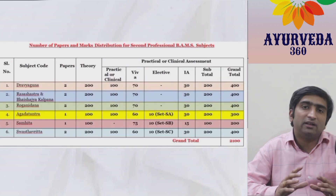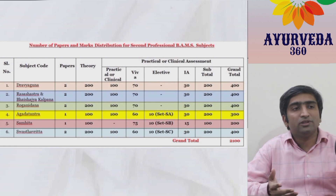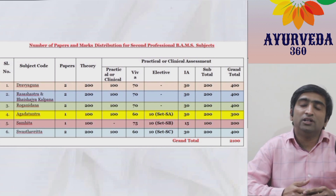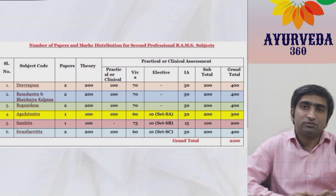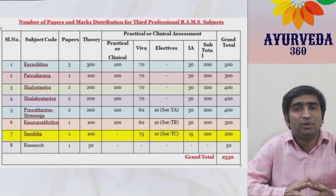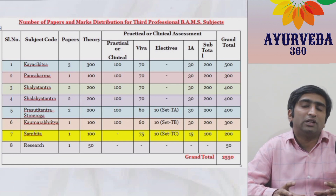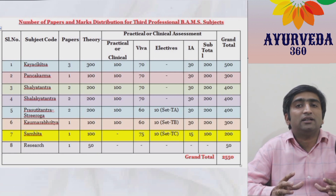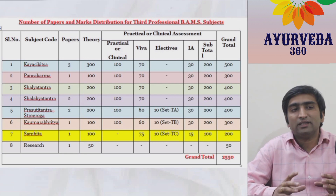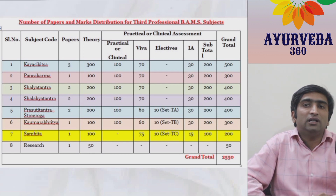Second professional BAMS follows a similar examination structure but with more subjects. Agada Tantra and Samhita Adhyayana again have single papers, while the rest have two papers each. A second-year student faces the examination out of a grand total of 2100. In the third professional BAMS, the maximum number of papers are there — Kayachikitsa itself has three papers. Research is included for 50 marks as an introduction, with no viva voce, to give students a basic idea of research methodology for future postgraduate or clinical research work. The third professional BAMS examination is out of 2550 marks.